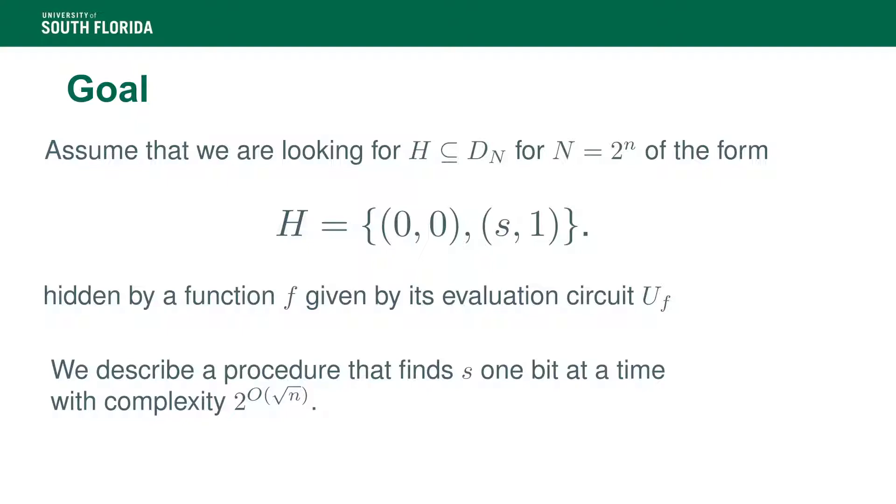The goal of it is given a subgroup which we know, subgroup of D_N, which we know to be of the special form that we saw in the last lecture, which is zero the neutral element and one element of the form s1, and hidden by a certain function, we want to find the secret s here, the only value that we do not know, in time 2 to the O of square root n.